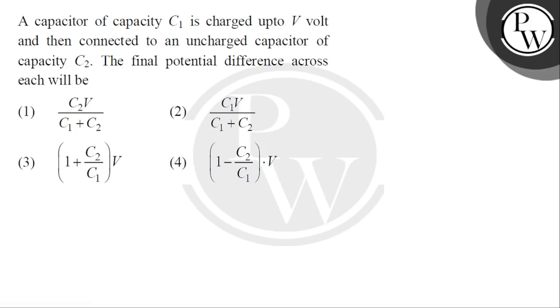Hello, let's read the question. A capacitor of capacity C1 is charged up to V volt and then connected to an uncharged capacitor of capacity C2. The final potential difference across each will be.